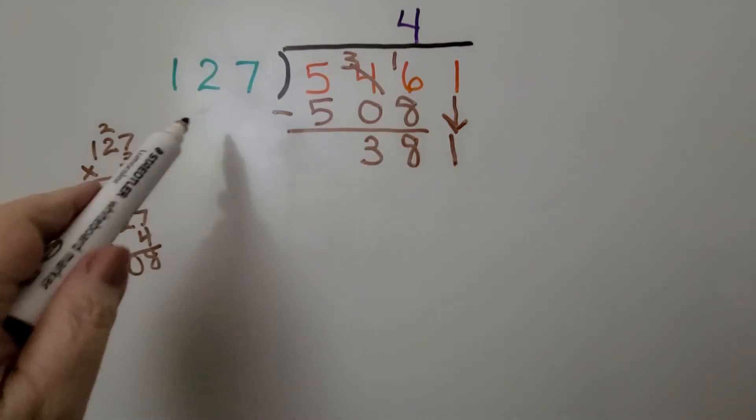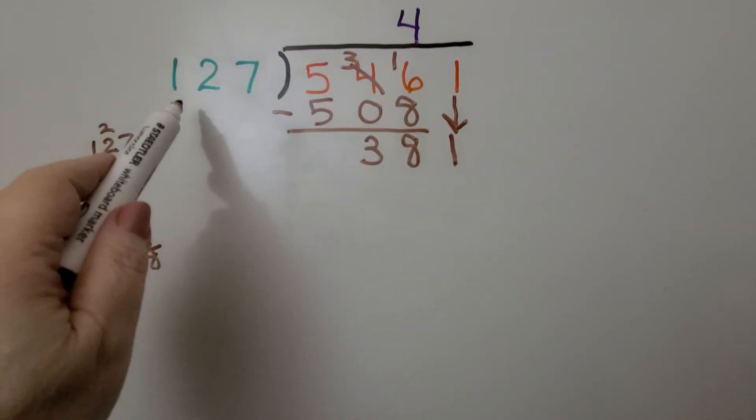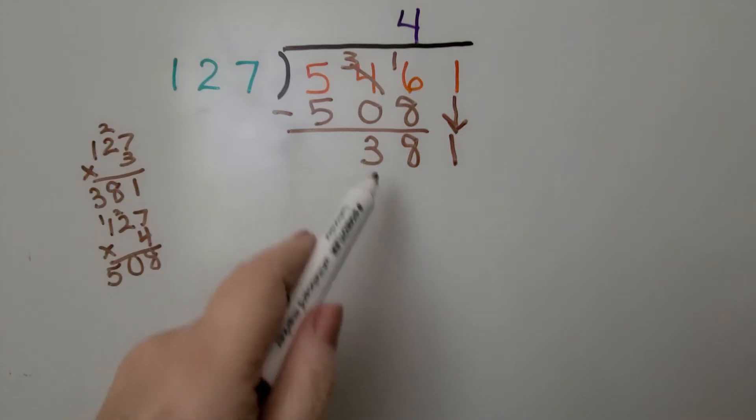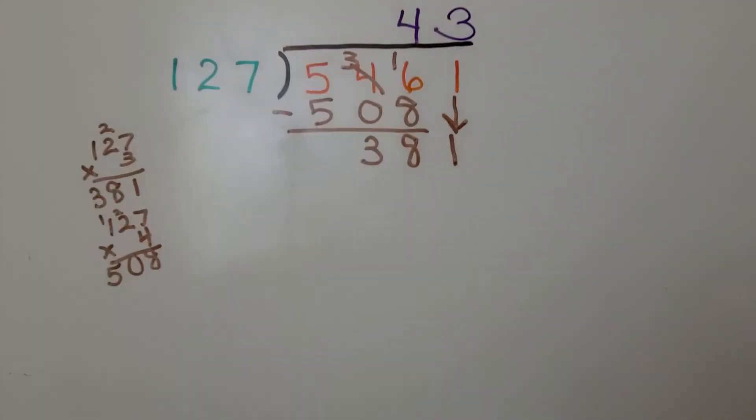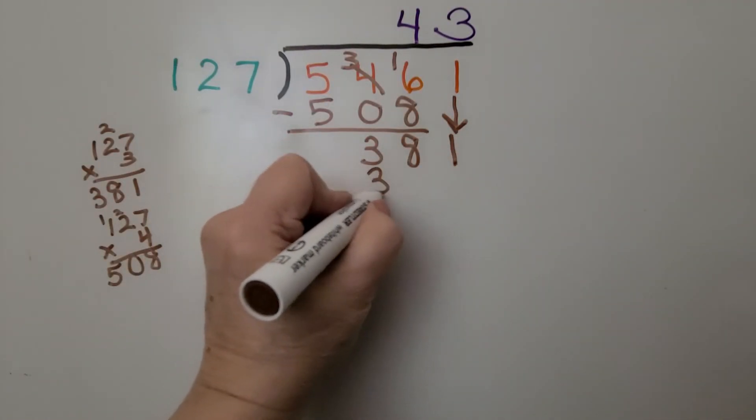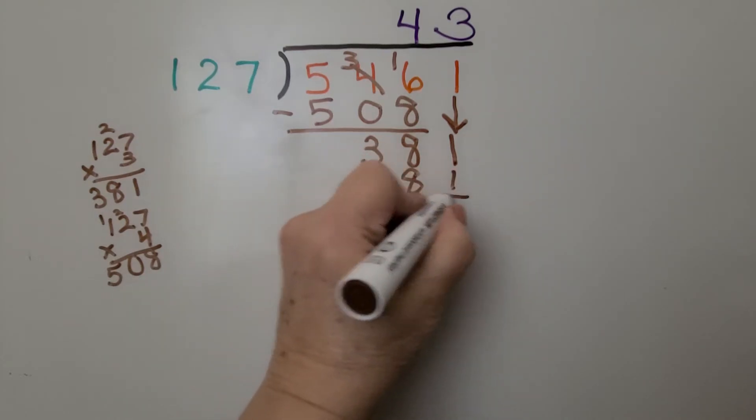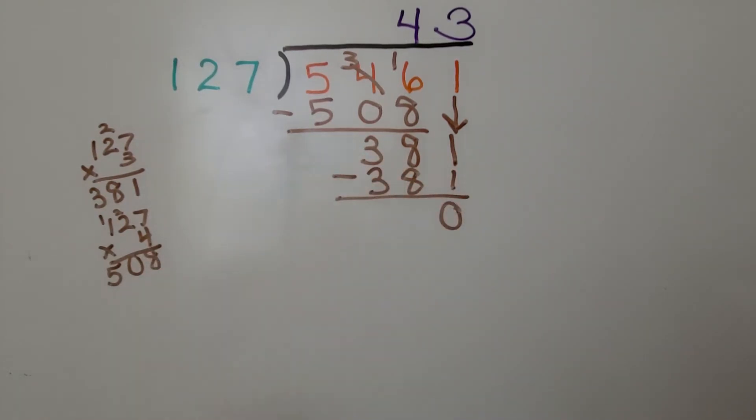Now we ask ourselves how many times 127 fits into 381. And lucky us, we have that multiplication on the side. We know it's 3 times. 127 times 3 is 381. So now we can subtract that 381. We get a 0 for a remainder. We know it's 43.